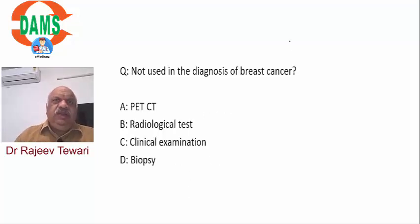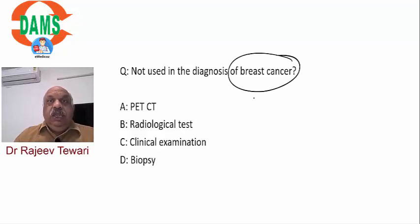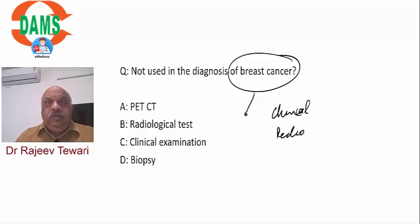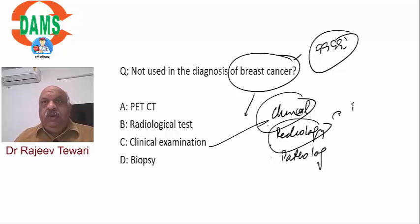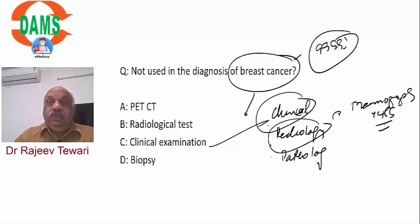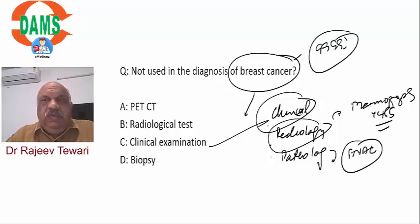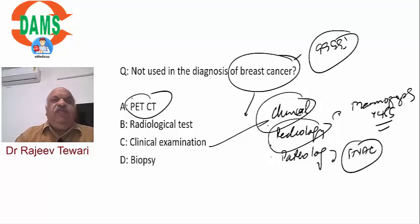Diagnosis of breast cancer - not used: triple assessment has 99.99% accuracy. It includes: clinical (physician examination), radiological (mammography ± ultrasound ± MRI), and pathological (FNAC gives cells; true-cut biopsy gives tissue - needed for ER/PR testing or pre-op chemotherapy). PET-CT is for detecting metastasis, not for primary diagnosis of breast cancer.